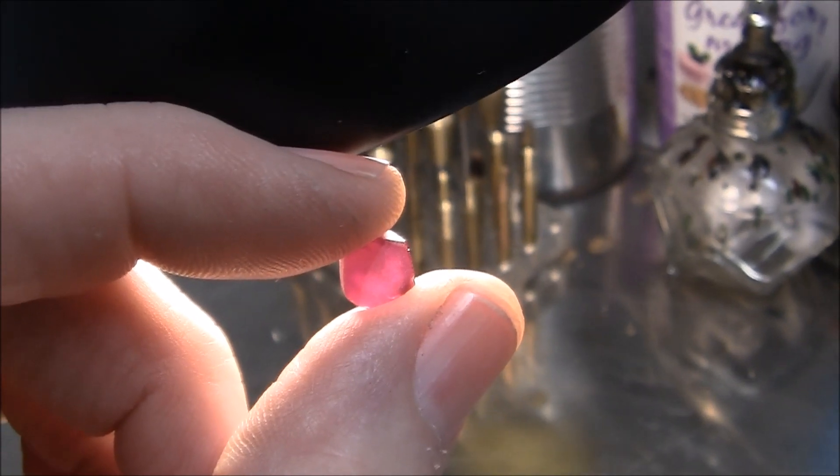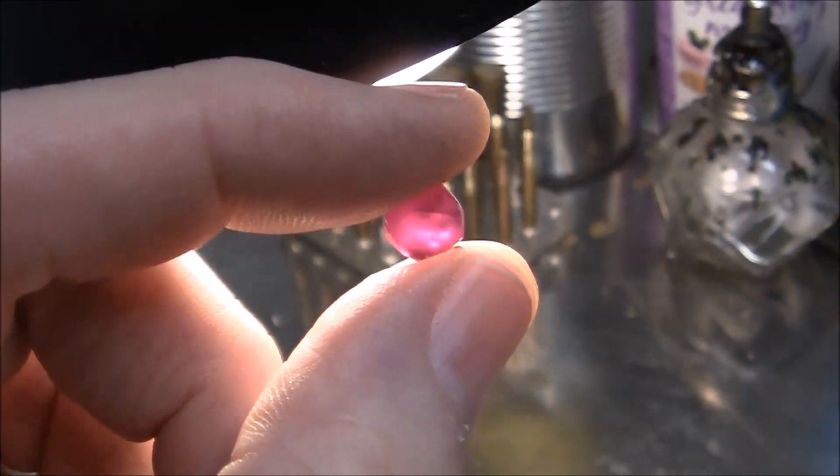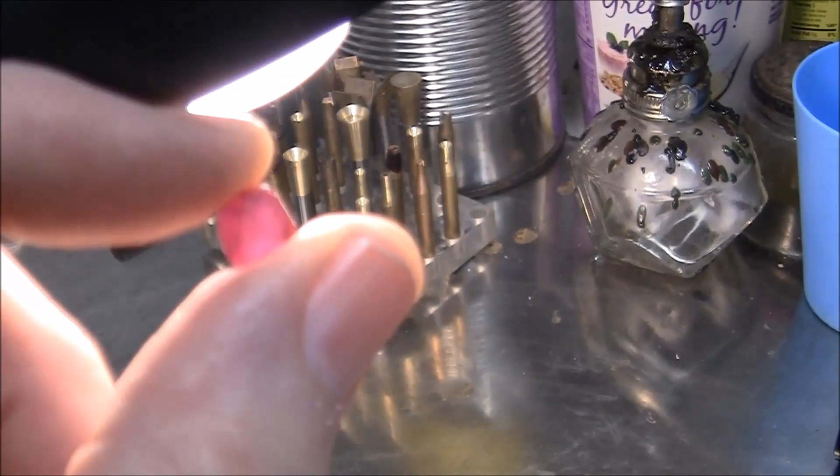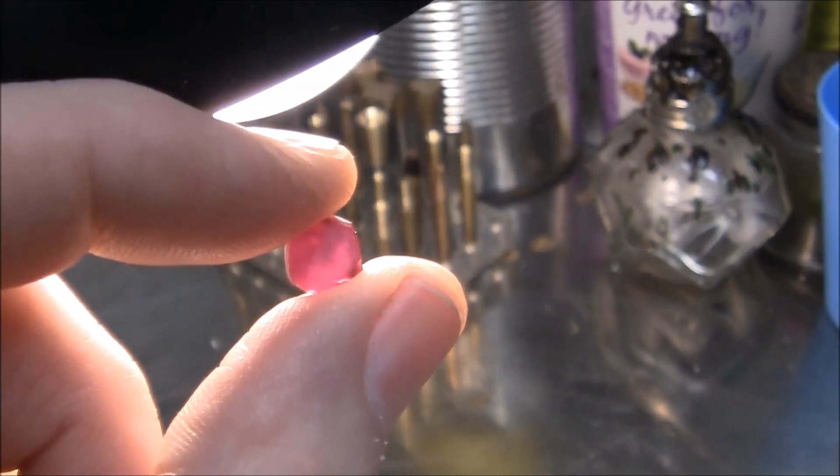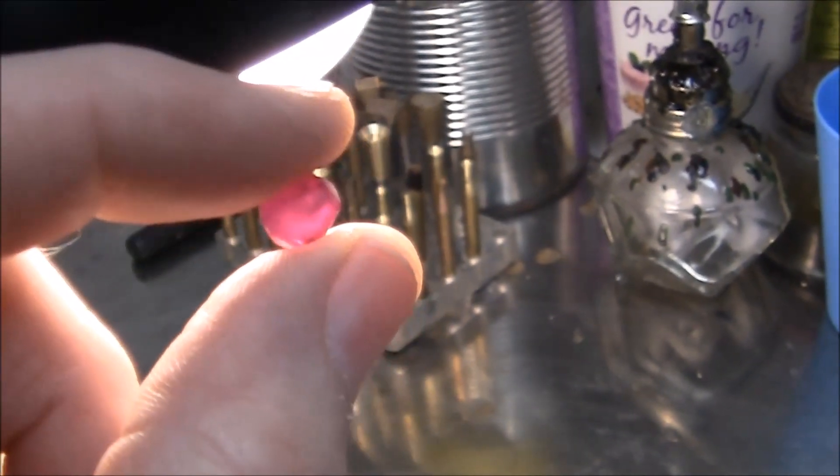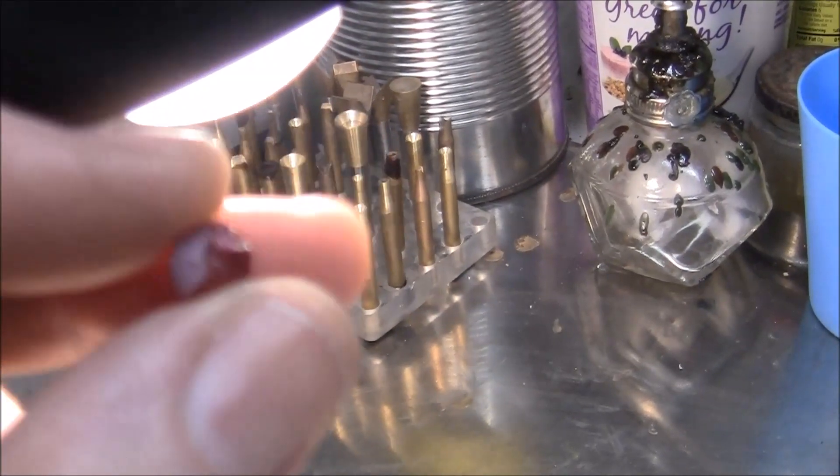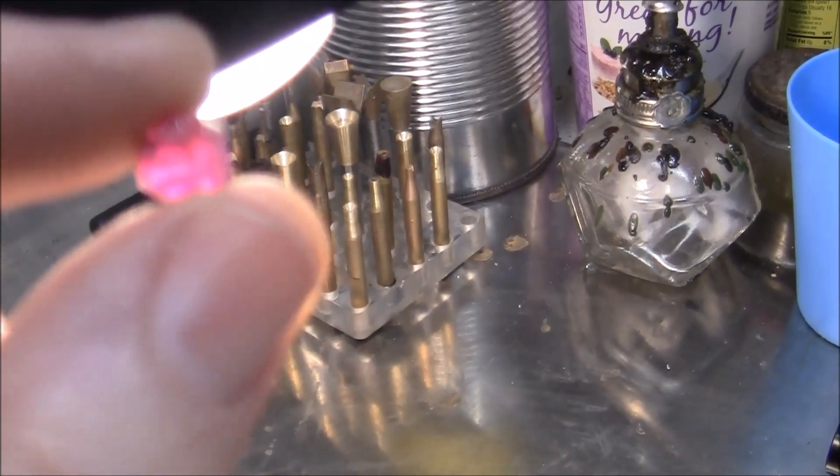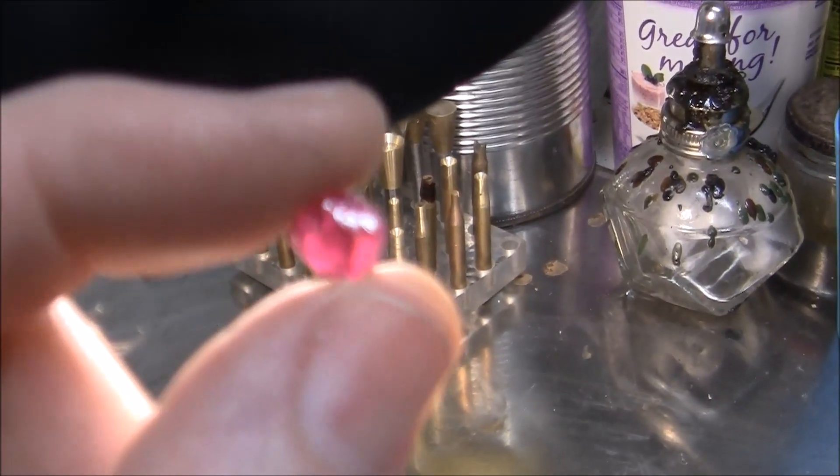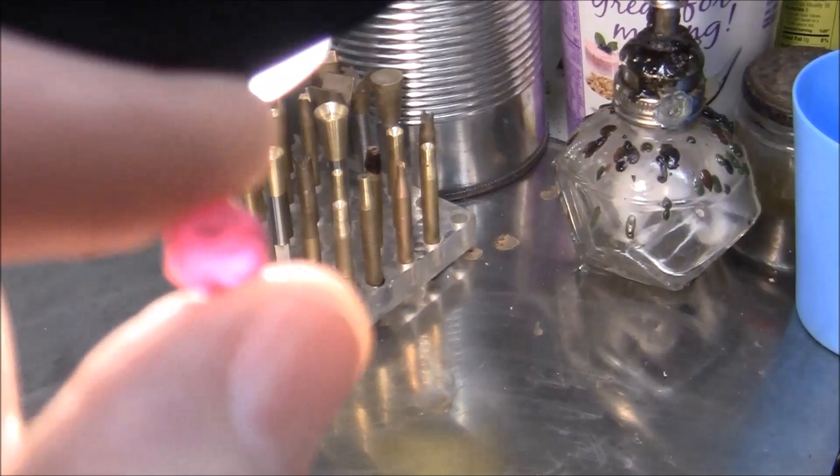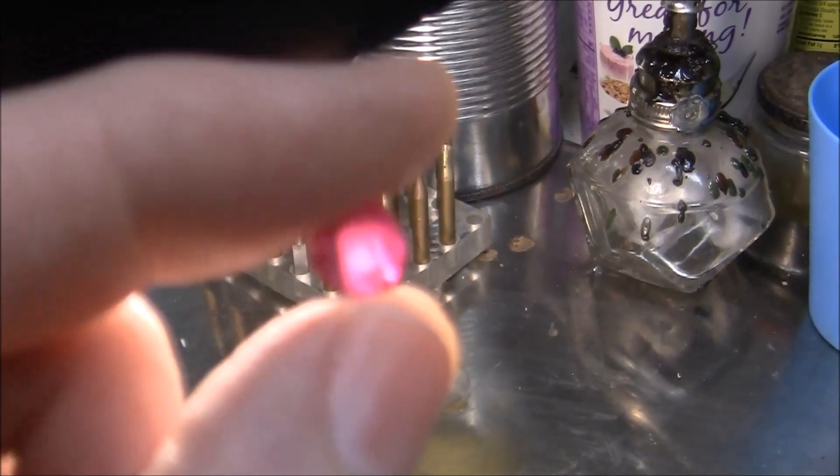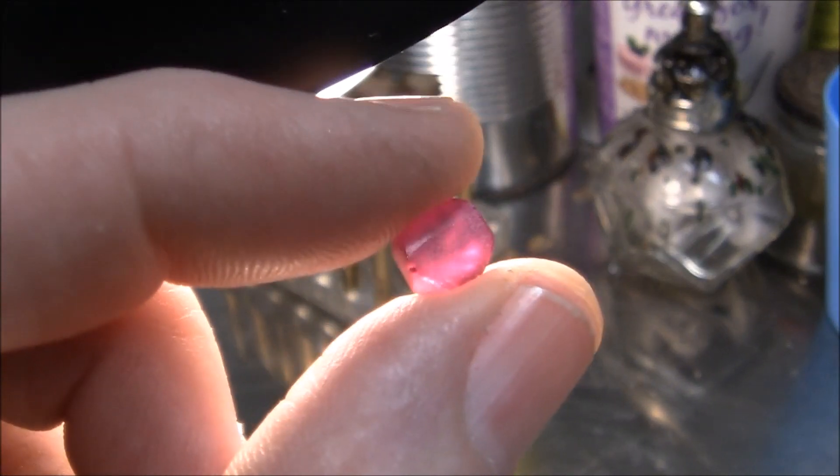Good morning viewers. This is a piece of red corundum, otherwise known as synthetic ruby. This is about an eight millimeter piece and weighs about five carats. I'm going to cut it in a standard round brilliant.